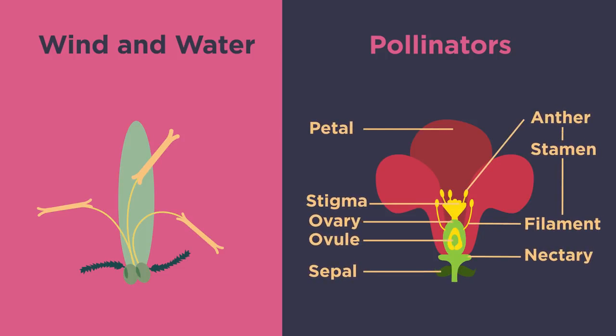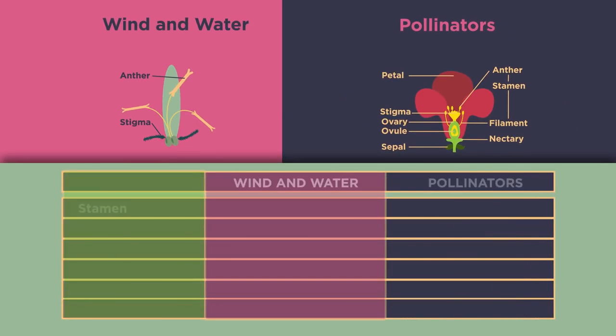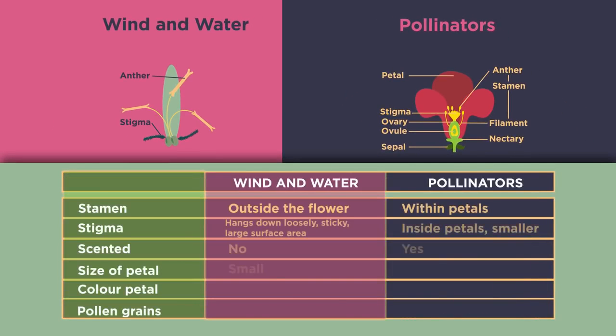Flowers pollinated by pollinators are structurally different from those pollinated by wind or water. Look at the differences in size, scent and color of the petals, and the positioning of the stamen and style. Here are some key differences. Why do you think they are different?